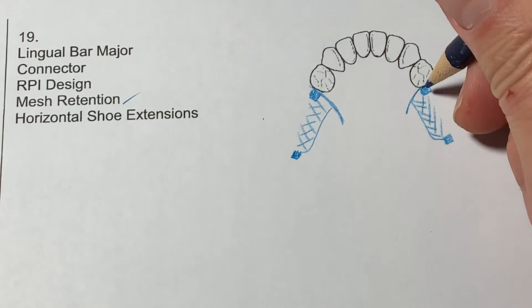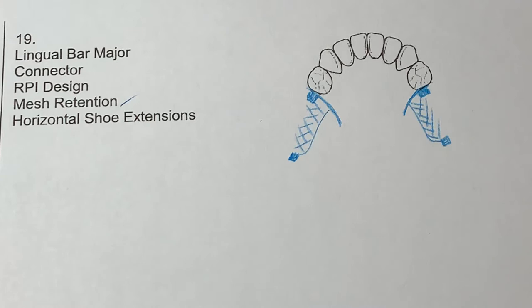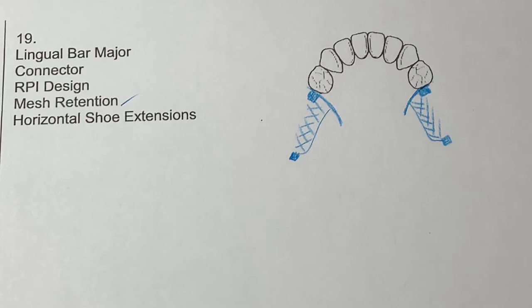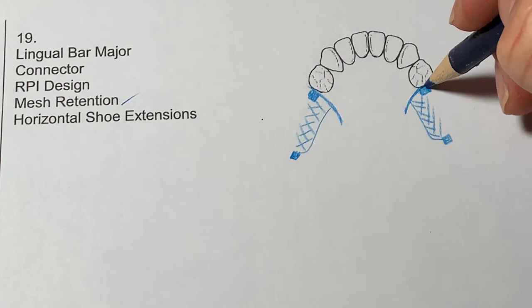What does a horizontal shoe extension do? These days, 2021, it maintains the length and integrity of the guide plane. Back in 1960s, it would compensate for the shrinkage of acrylic as metal was a more accurate material that would be adjacent to the CEJ, as well as less free monomers in this area as well.